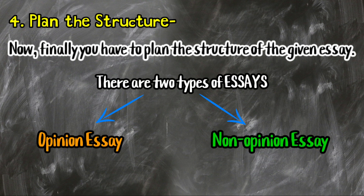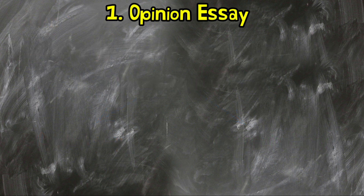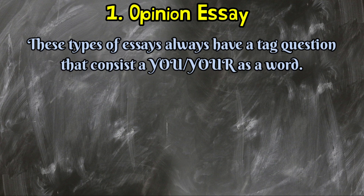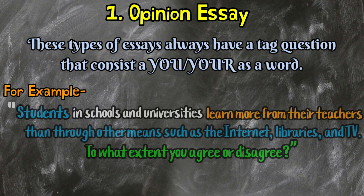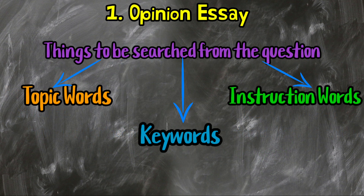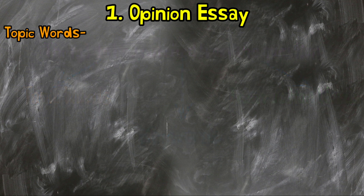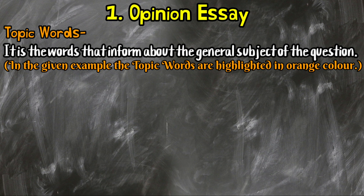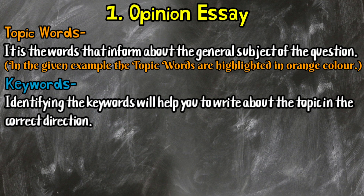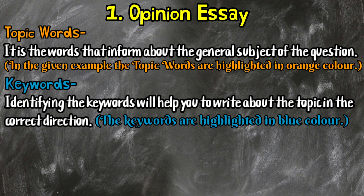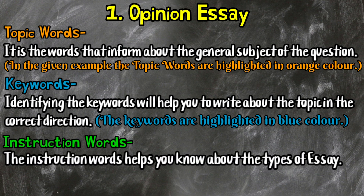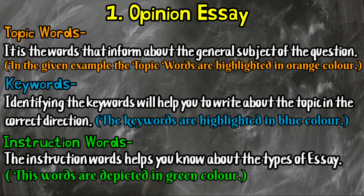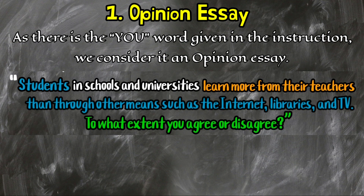Number 1: Opinion essay. These types of essays always have a tag question that consists of 'you' or 'your' as a word. For example: 'Students in schools and universities learn more from their teachers than through other means such as the internet, libraries, and TV. To what extent do you agree or disagree?' The topic words, keywords, and instruction words need to be found. Topic words inform about the general subject — highlighted in orange. Keywords help you write about the topic in the correct direction — highlighted in blue. Instruction words tell you the type of essay — depicted in green. As the word 'you' is in the instruction, we consider it an opinion essay.